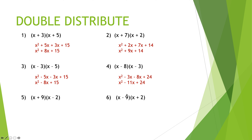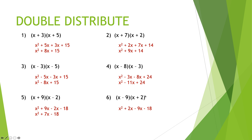Let's have you try numbers five and six. For number five: x times x is x squared, x times negative two is negative two x, nine times x is nine x, and nine times negative two is negative eighteen — combining the middle terms gives x squared plus seven x minus 18. For number six: x times x is x squared, x times two is two x, negative nine times x is negative nine x, negative nine times two is negative eighteen — combining gives x squared minus seven x minus 18.